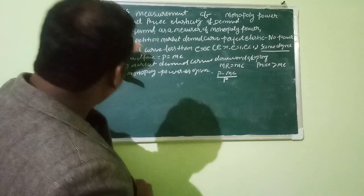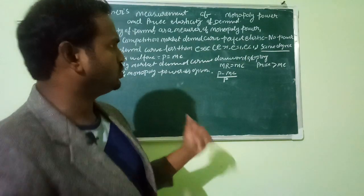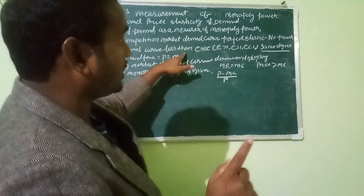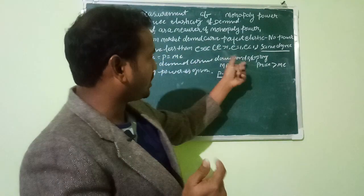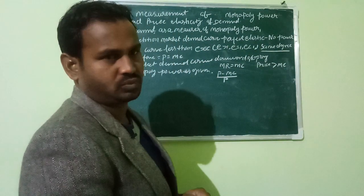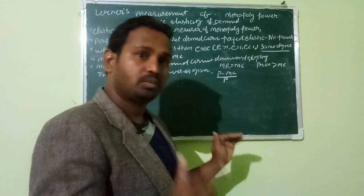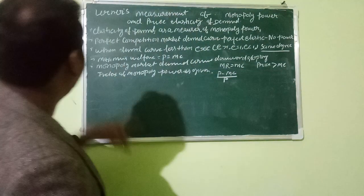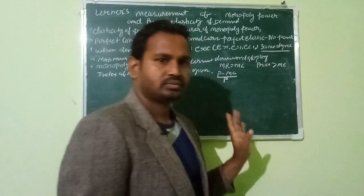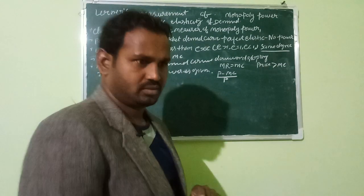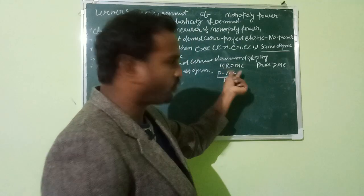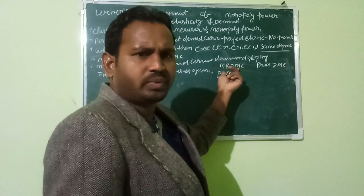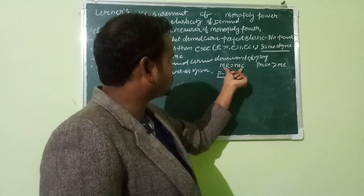In perfect competition, the market demand curve is perfectly elastic, so there is no monopoly power. When the demand curve is downward sloping, some degree of monopoly power arises. In perfect competition, maximum welfare occurs where price is equal to marginal cost. In a monopoly market, the demand curve is downward sloping. The equilibrium point is where marginal cost equals marginal revenue — this is the main condition for both perfect competition and monopoly.